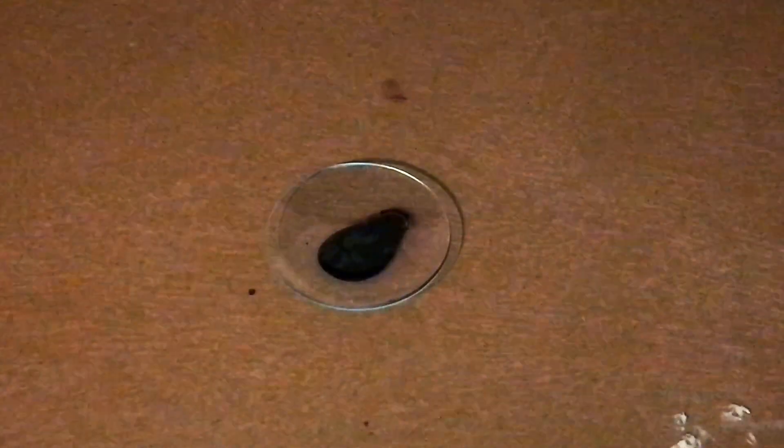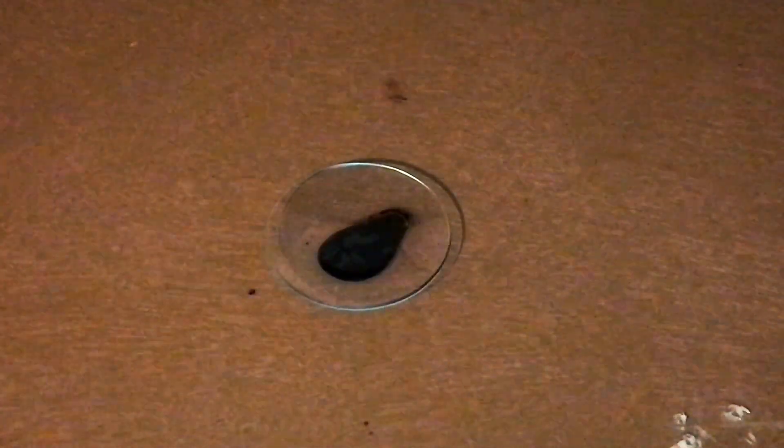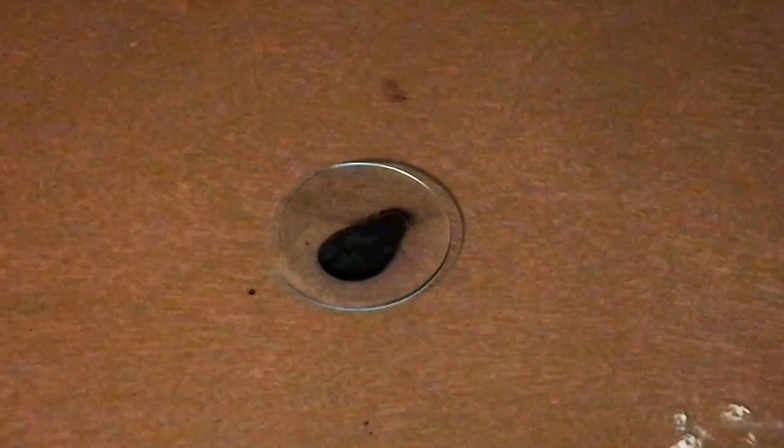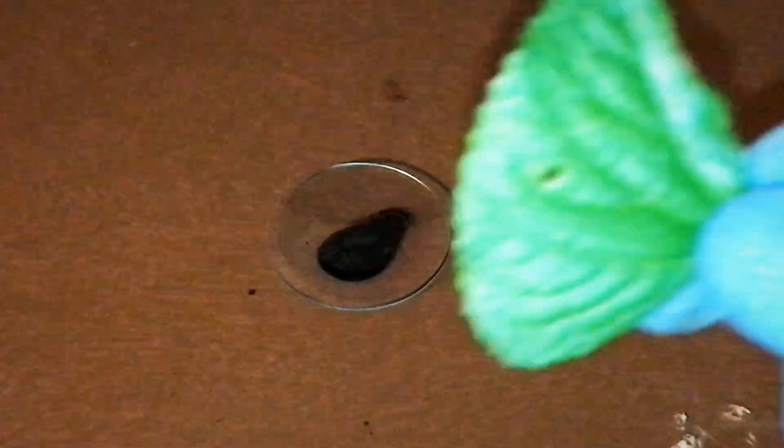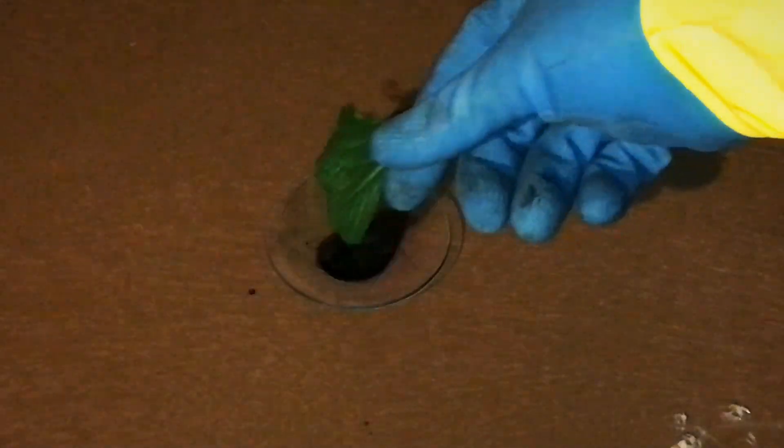Manganese heptoxide reacts greatly with organic material. So to test that, I'm going to place a piece of this leaf in the manganese heptoxide solution.